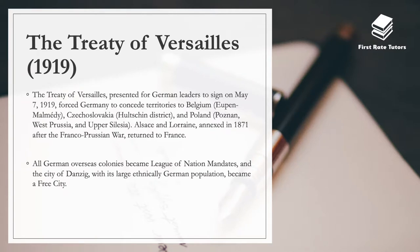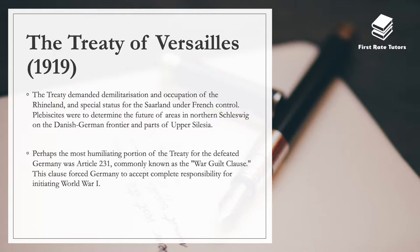The Treaty of Versailles, presented to German leaders to sign on May 7th 1919, forced Germany to concede territories to Belgium, Czechoslovakia, and Poland. Alsace-Lorraine, which had been annexed by Germany in 1871 after the Franco-Prussian War, was returned to France. All German overseas colonies became League of Nations mandates, and the city of Danzig, with its large ethnically German population, became a free city. The treaty also demanded demilitarization and occupation of the Rhineland, a special status for the Saarland under French control for 15 years, and plebiscites to determine the future of northern Schleswig and parts of Upper Silesia.